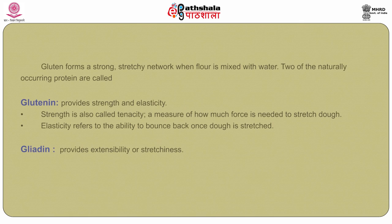It is not surprising that people have a difficult time understanding gluten because it does not exist in nature. Gluten is a water insoluble protein that is formed when water is mixed with wheat flour. Proteins are very large molecules composed of amino acids. There are two naturally occurring proteins in flour called glutenin and gliadin.